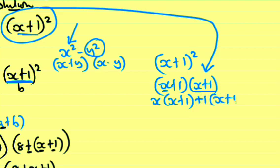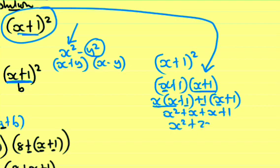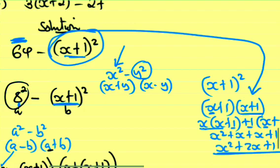x times x equals x², x times 1 equals x, 1 times x equals x, and 1 times 1 equals 1. Combining like terms: x² + 2x + 1, which equals (x+1)².